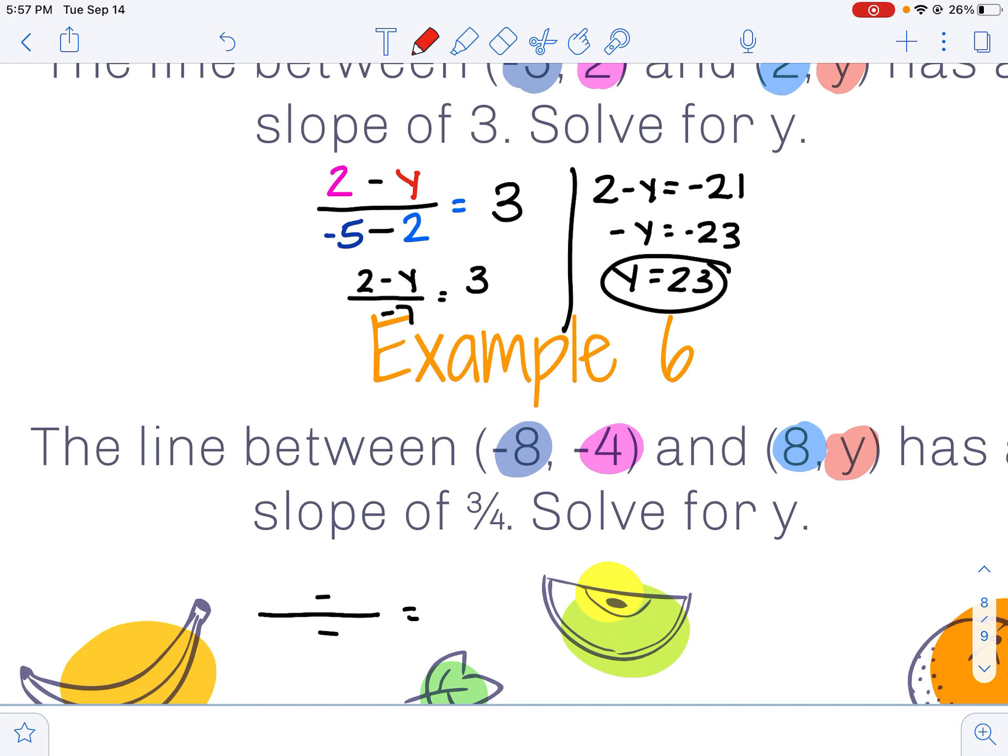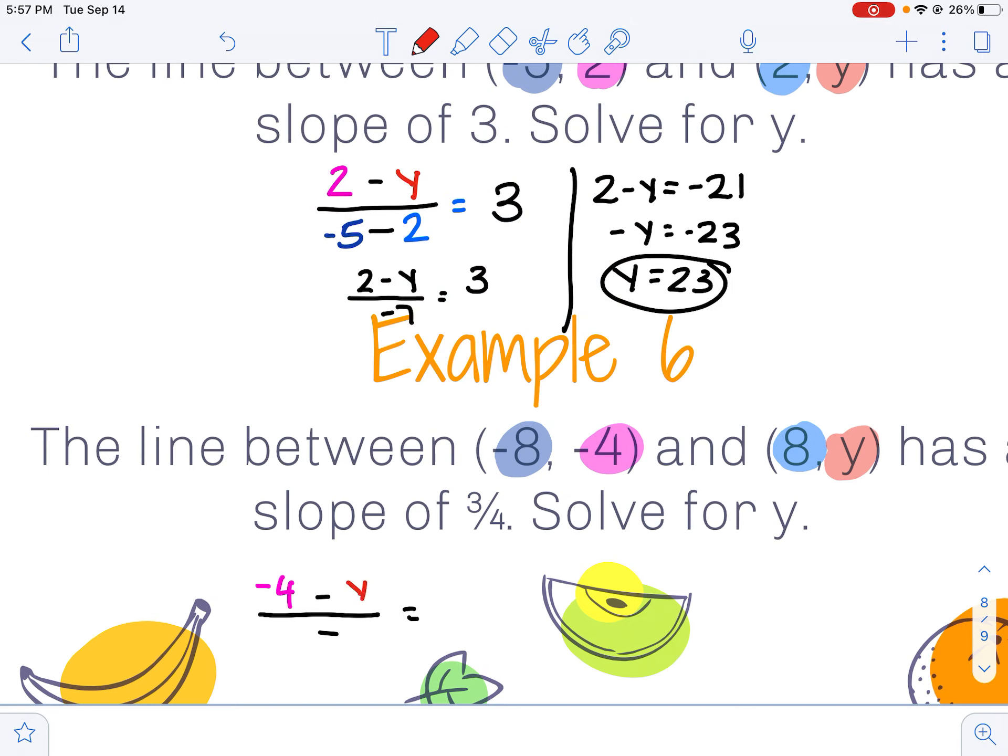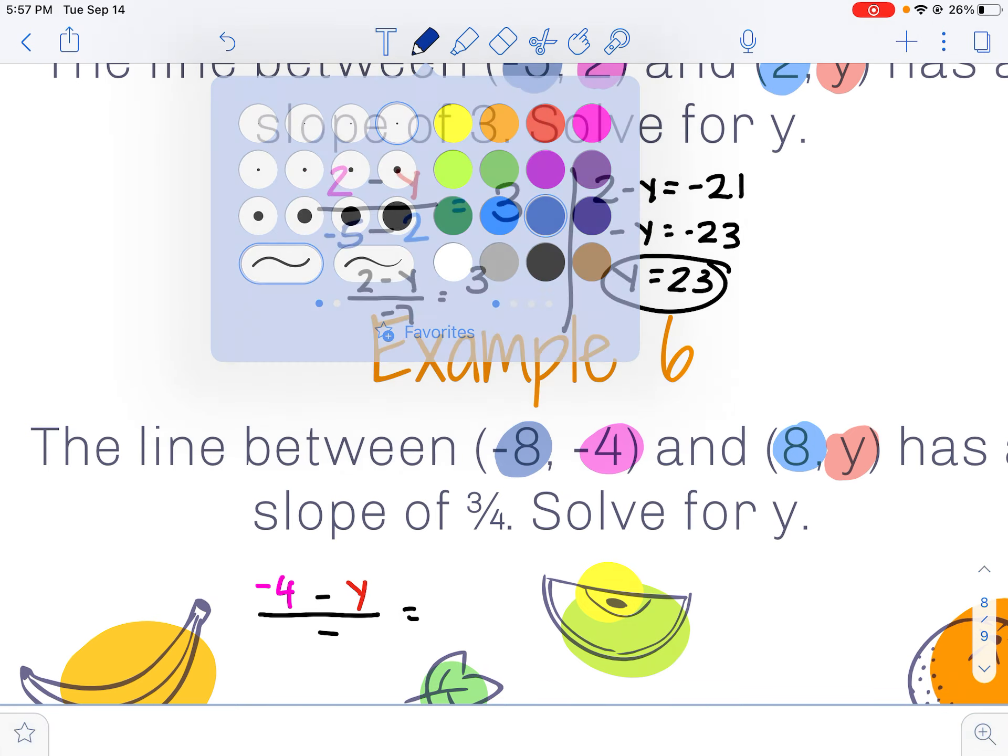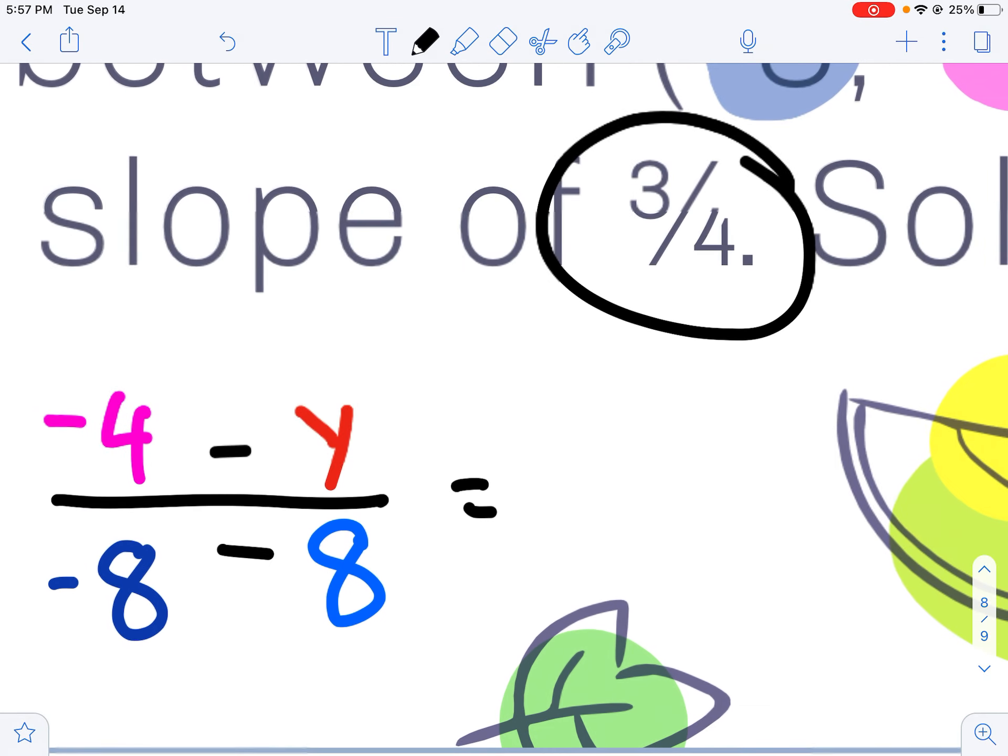I'm going to subtract—my first y value, negative 4, minus my second y value which is unknown, so I'm just filling in y. Divide that by my first x value, negative 8, minus my second x value, positive 8, and set that equal to the slope that I was told, 3/4.